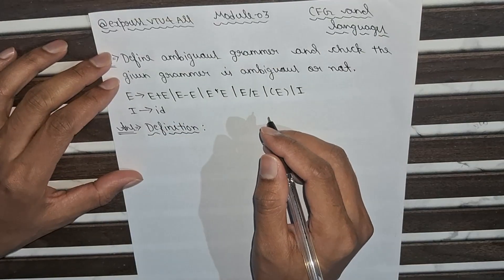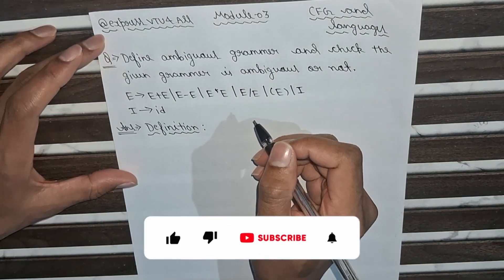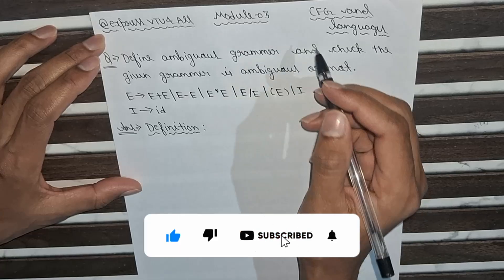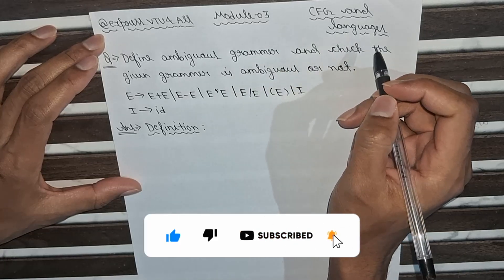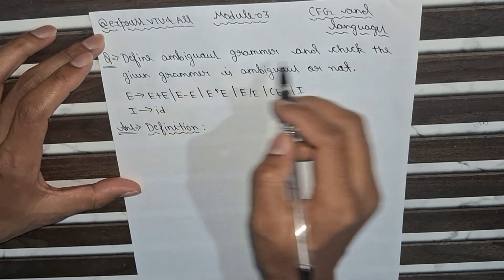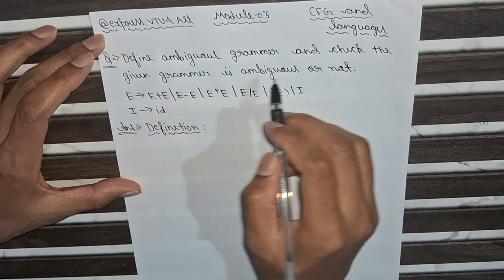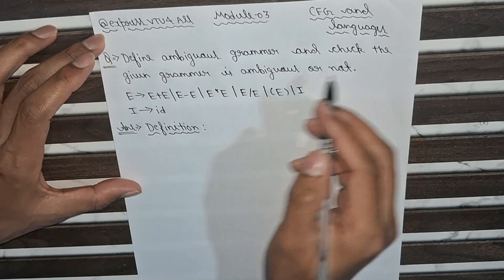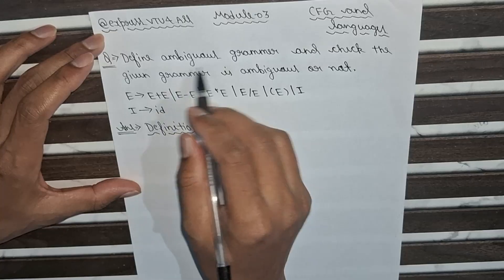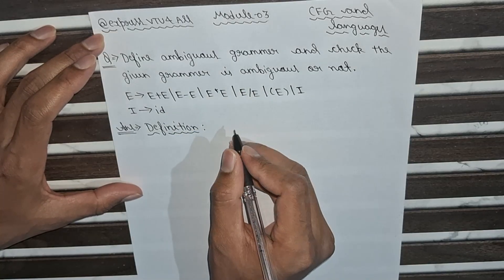Hello everyone, welcome back to Express Video For All. Today we are going to solve a very important question from Module 3: Context Free Grammar and Languages. The question is: define ambiguous grammar and check whether the given grammar is ambiguous or not. We will first know the definition of ambiguous grammar.